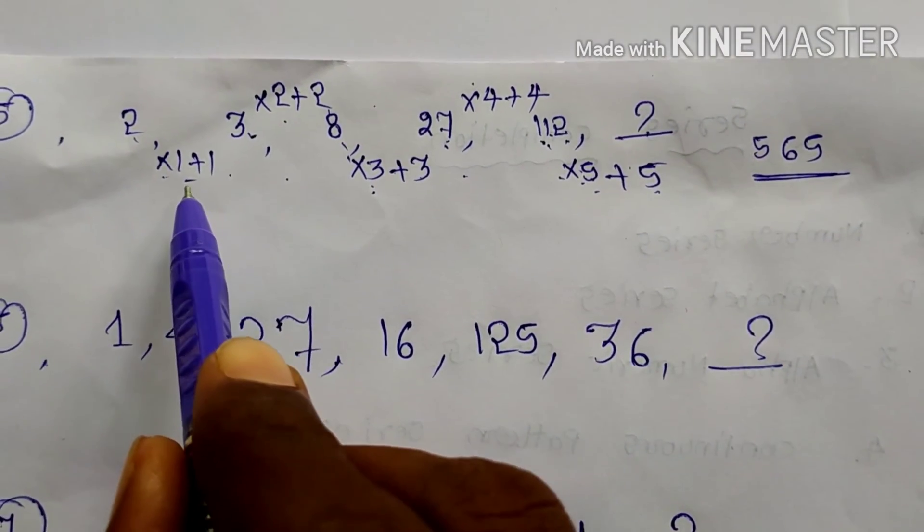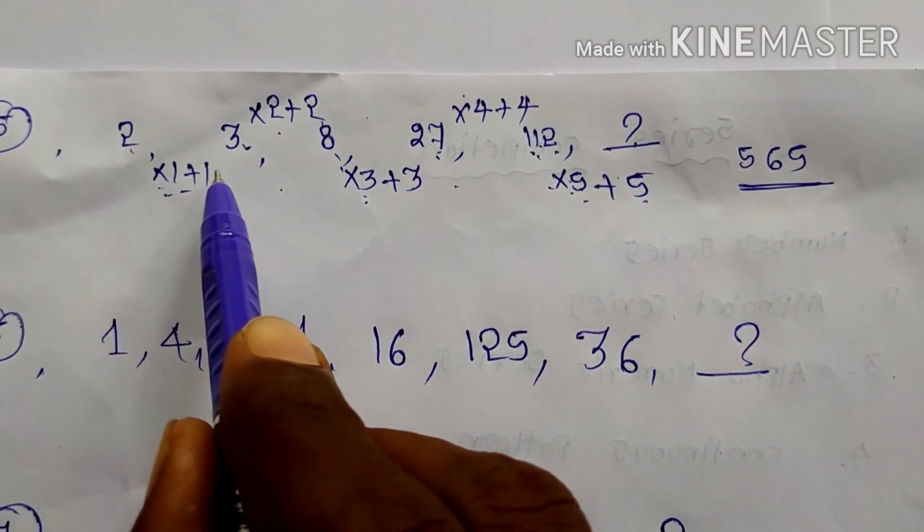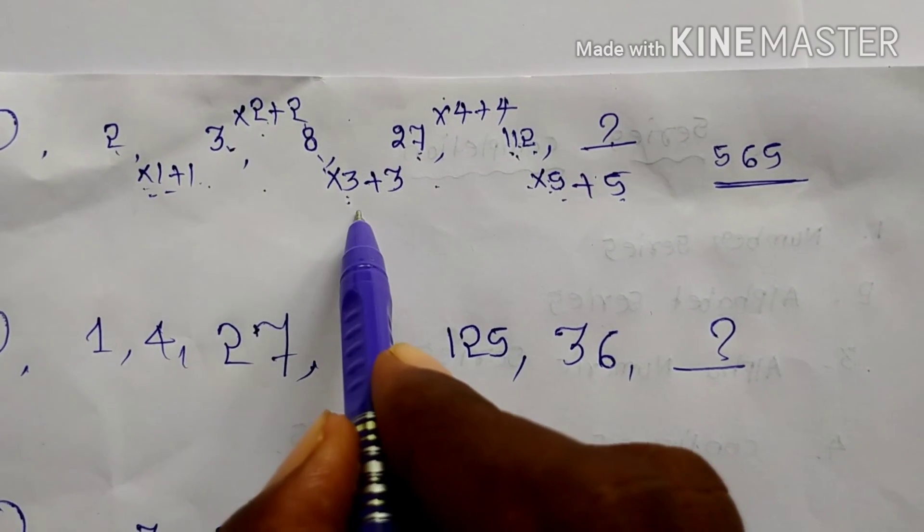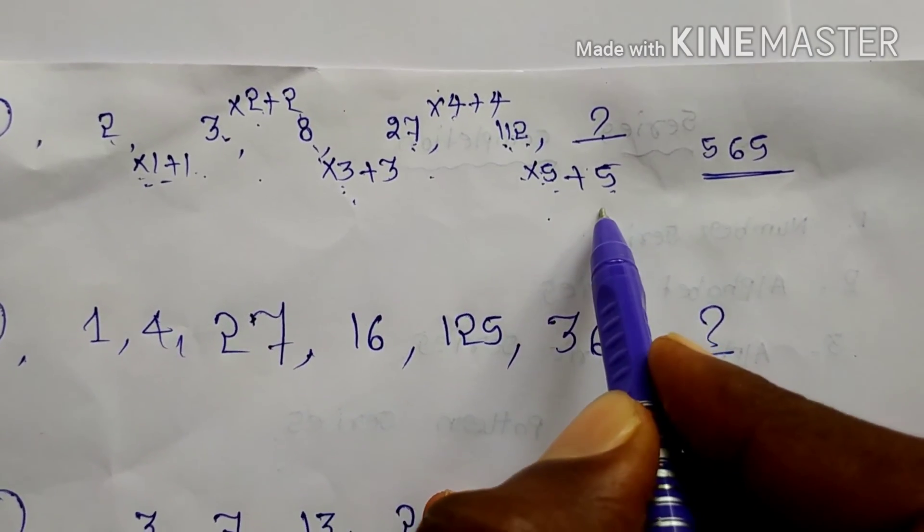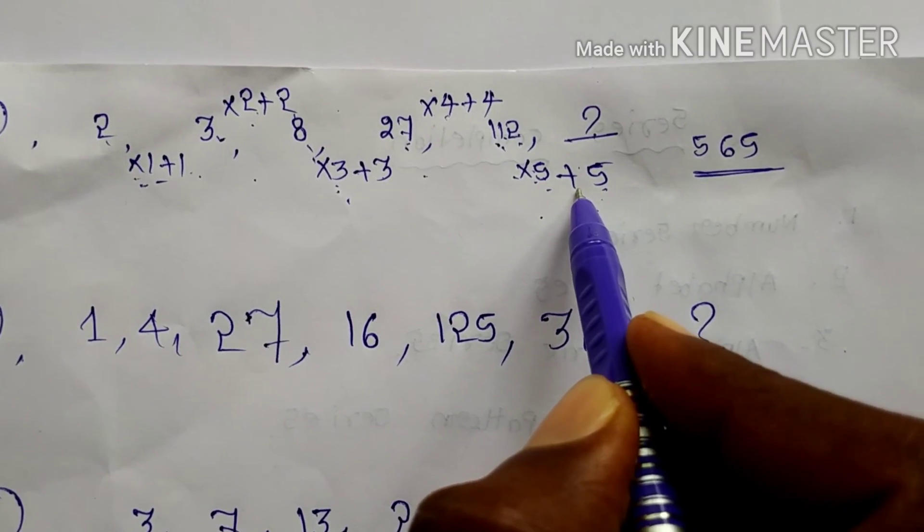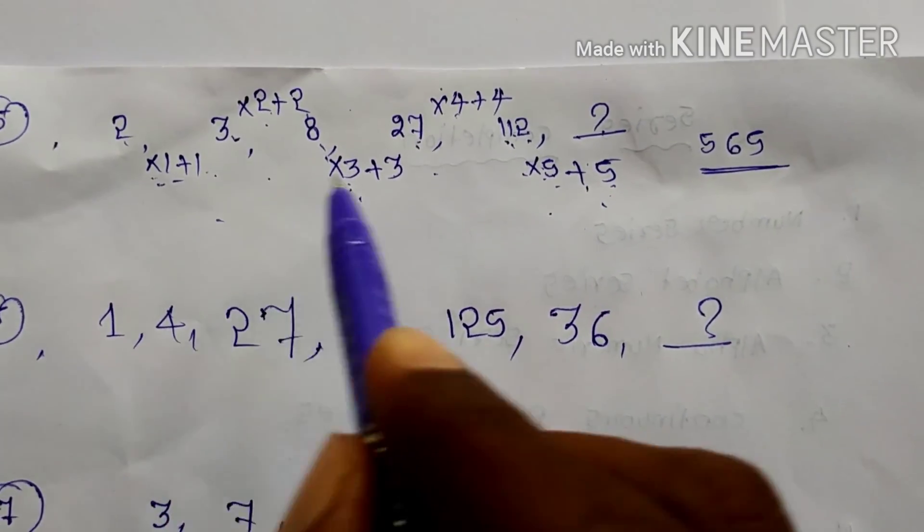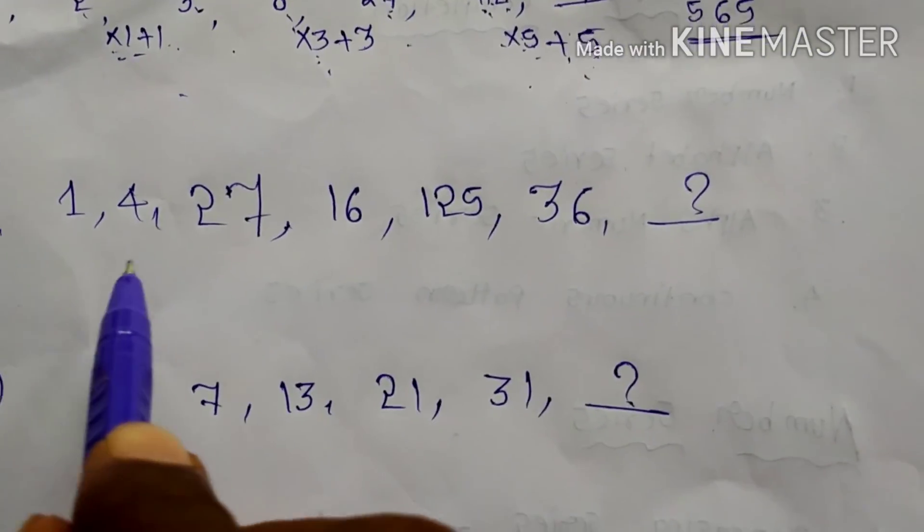Into 1, into 2, into 3, into 4, into 5, into 6. Each and every time we are multiplying with same number and also adding the same number. That means into n plus n only. Into 1, plus 1.